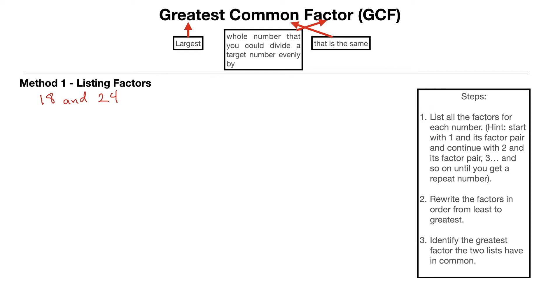But we're going to follow these steps right here. So if we look over here at step number one, we're going to be listing all the factors for each number. And I have a hint, and my hint right here has to do with starting with 1 and its factor pair, continue with 2 and its factor pair, and so on until you get a repeat number. The biggest mistake people make when they're listing factors is they miss one and they forget one. So for example, if I have the number 18, I could say, well, 1 and 18, that's a pair. When multiplied together, it gets 18.